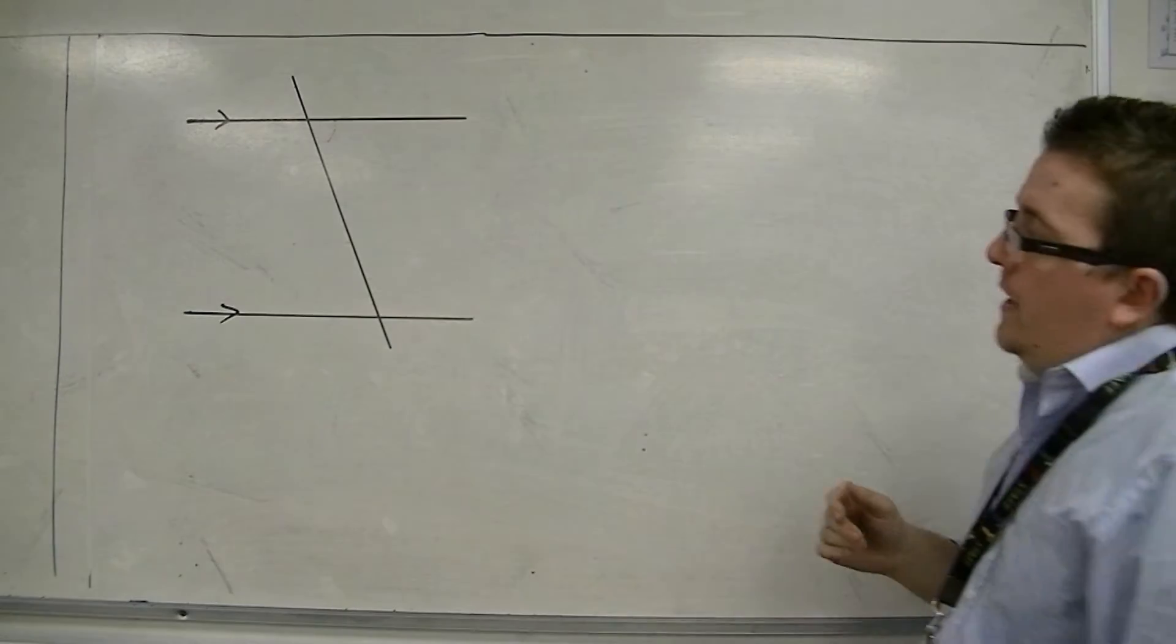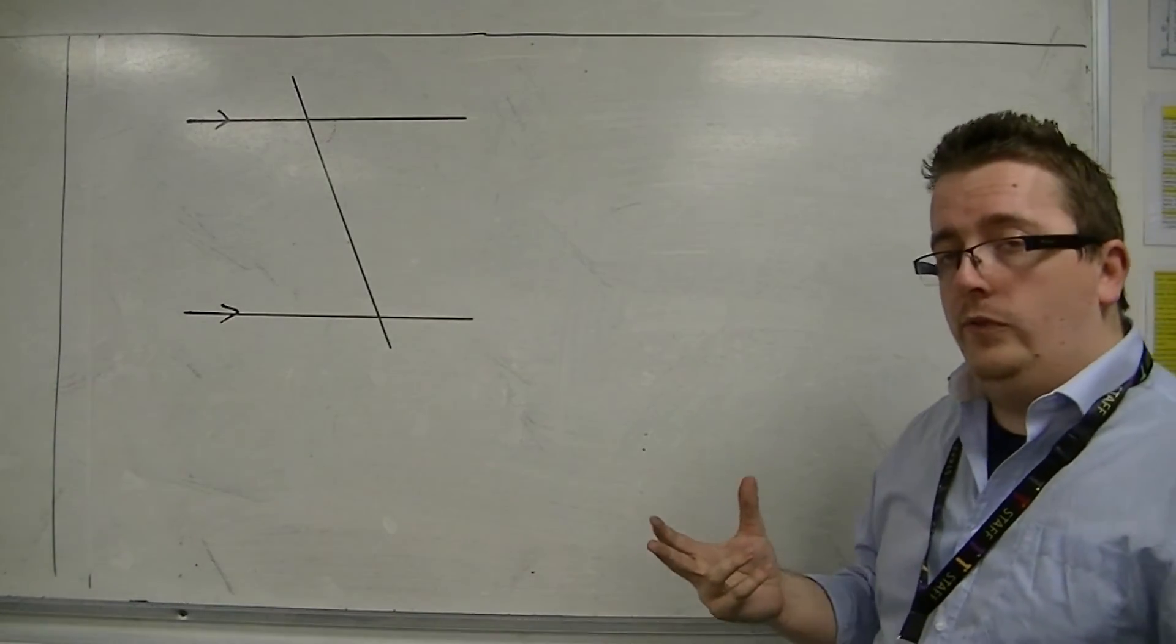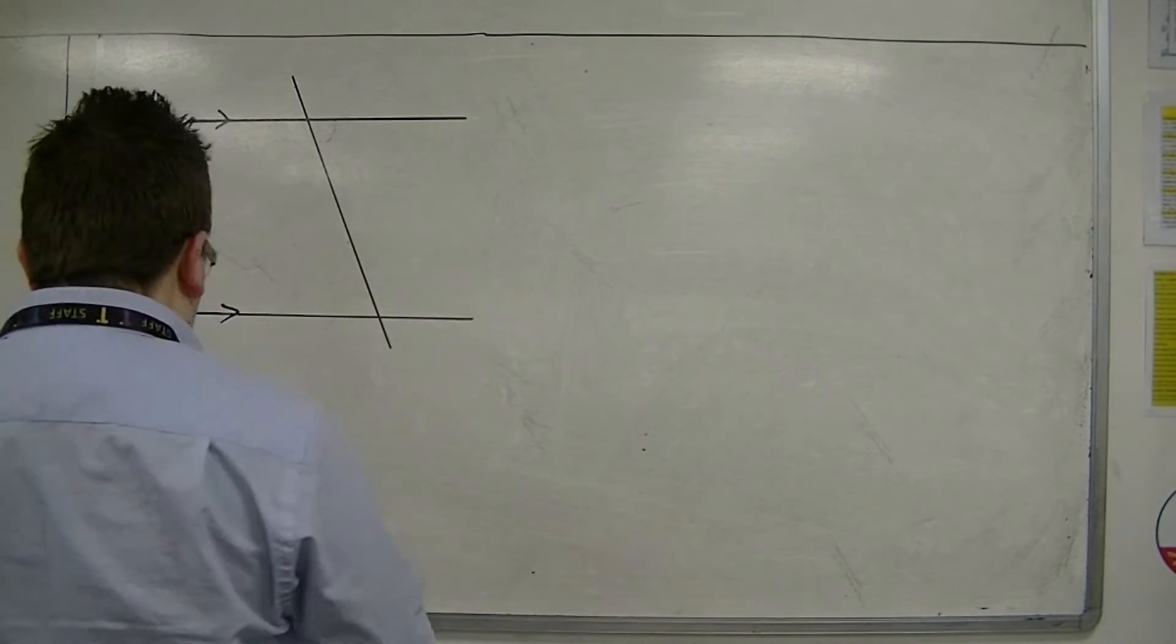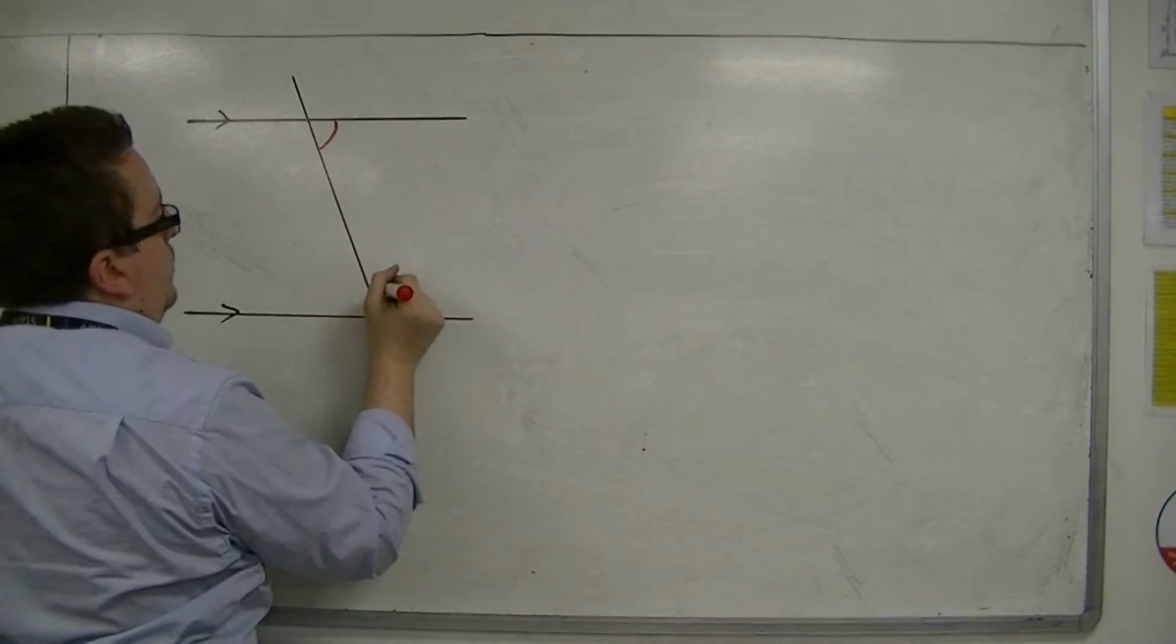Now when we're looking at this, we've looked at corresponding angles, we've looked at alternate angles, and now we have the third property between this angle and this angle.